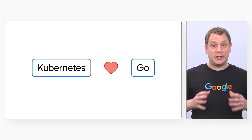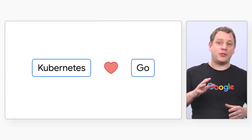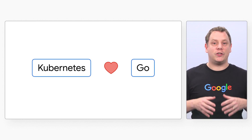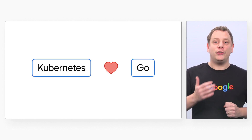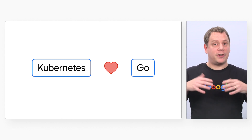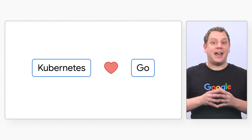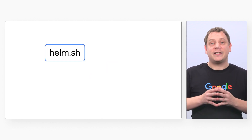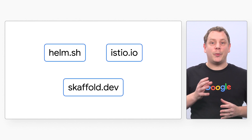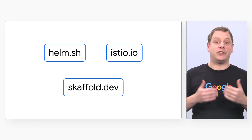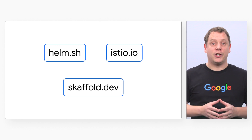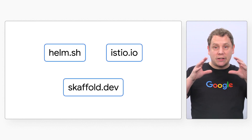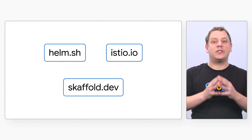Third, Kubernetes is written in Go, so it sort of speaks Go natively. When you want to extend Kubernetes with your custom operator, you know that implementing it in Go is the most straightforward option. The client API and most of the standard Kubernetes toolings are written in Go. For example, the Helm project — a popular tool to manage Kubernetes resources — or Istio, the service mesh, or Skaffold, a continuous development tool; they are all written in Go for smooth integration with Kubernetes.